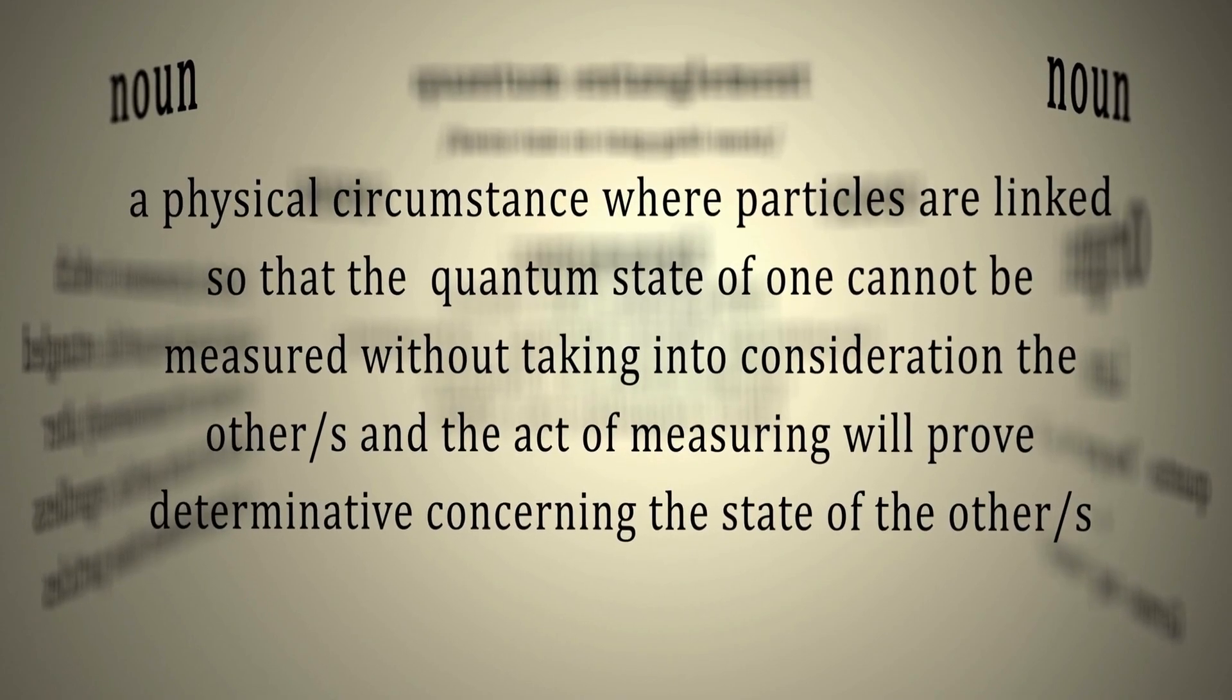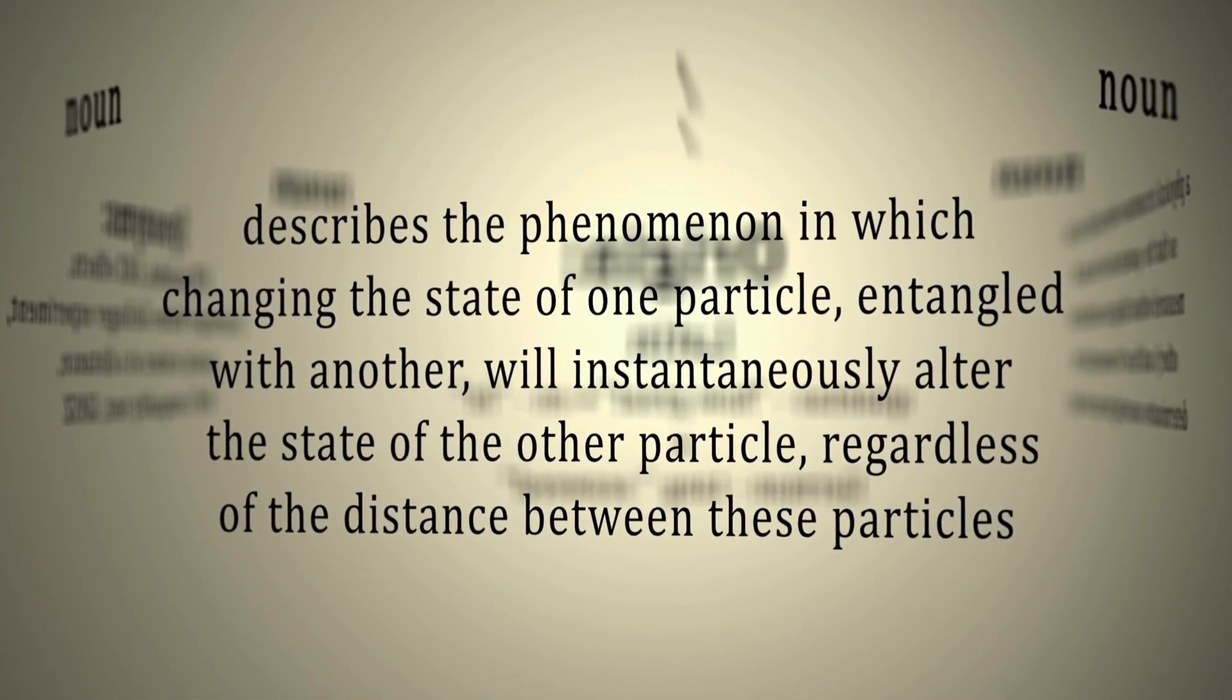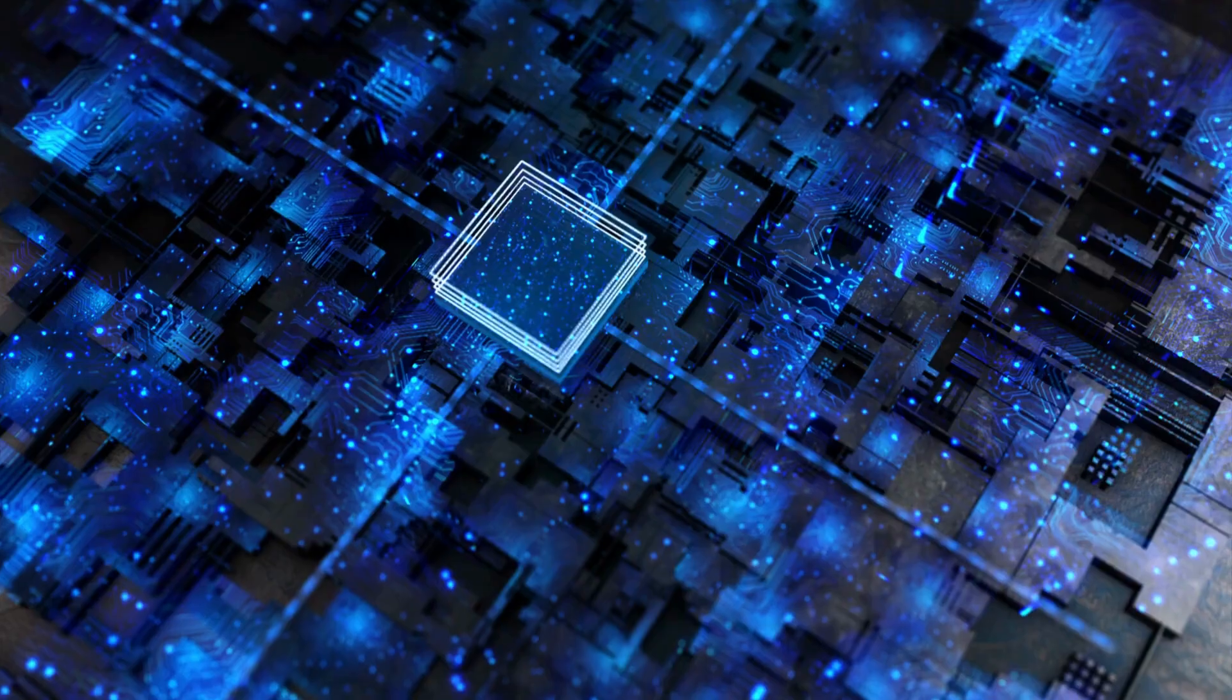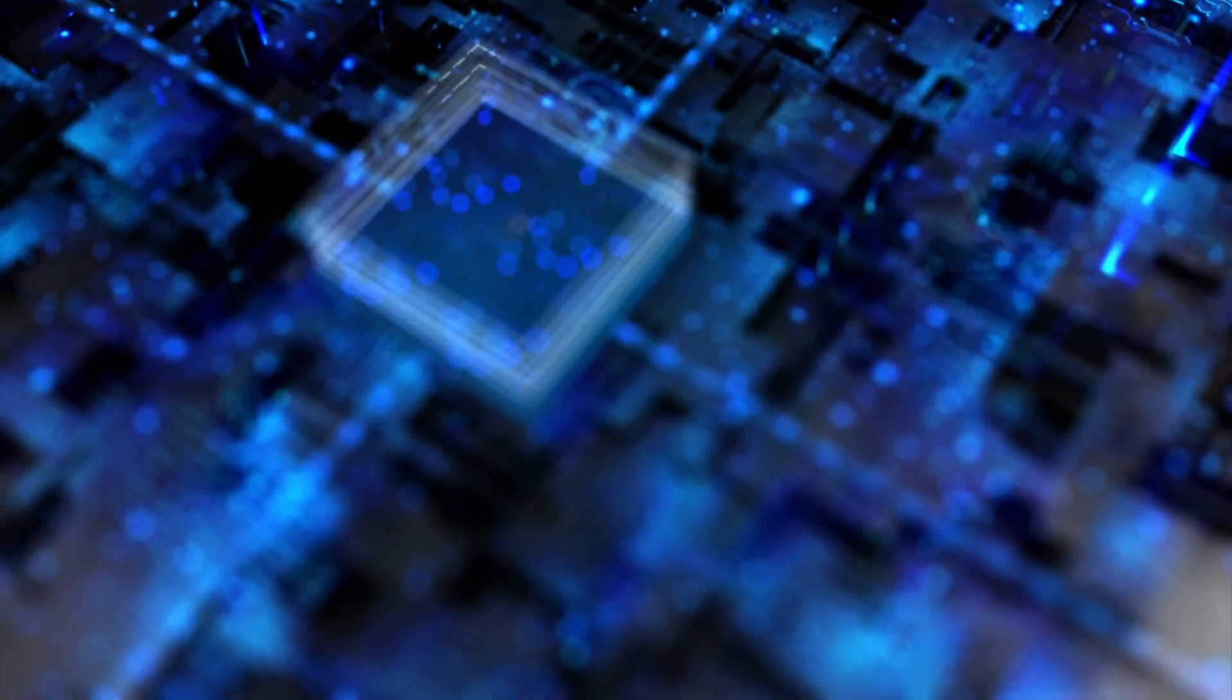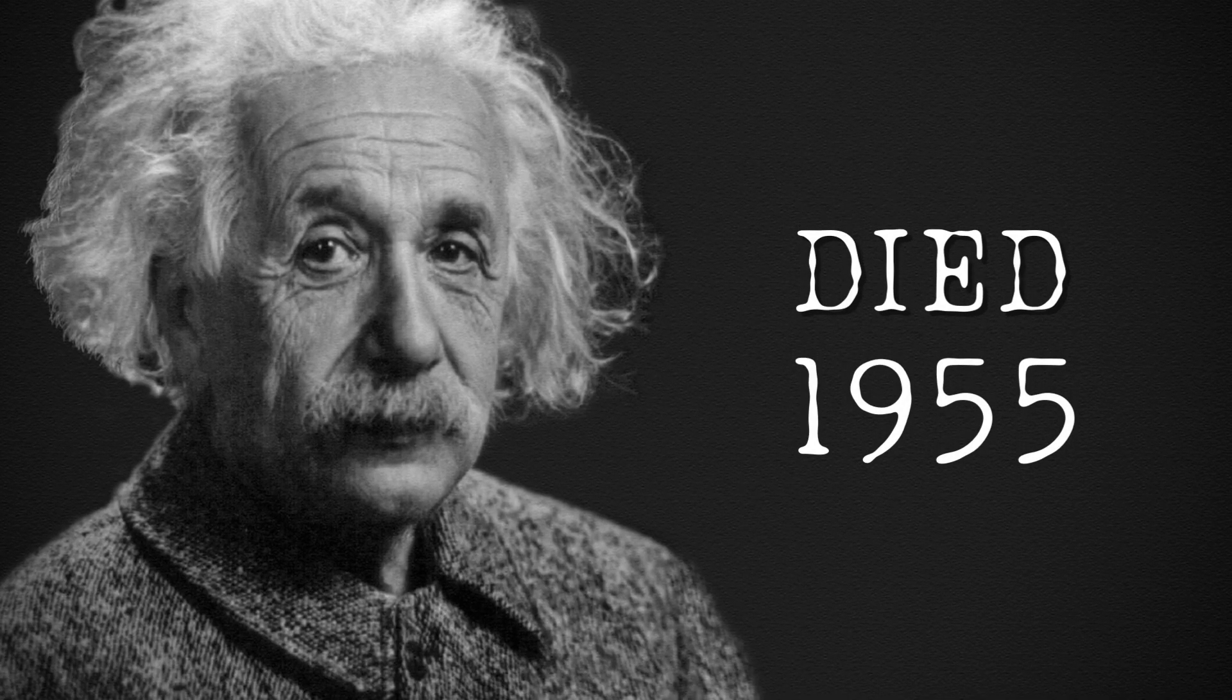After the EPR paper was published in 1935, there was debate and discussion about entanglement and its implications for quantum mechanics. Some physicists like Niels Bohr argued that the EPR paper did not demonstrate any inconsistencies in quantum mechanics. Einstein passed away in 1955,